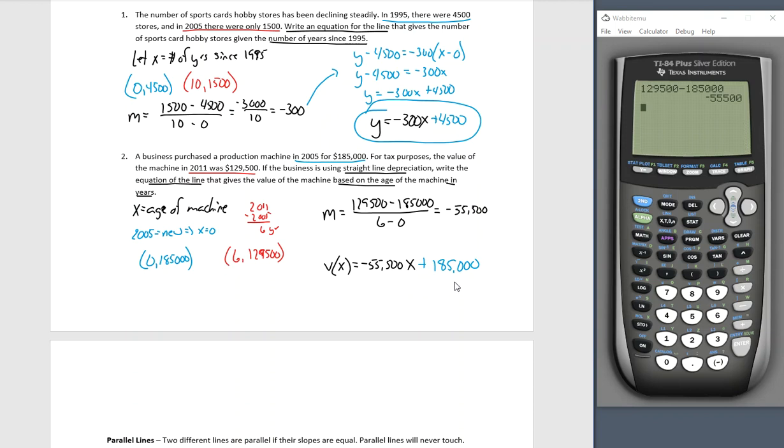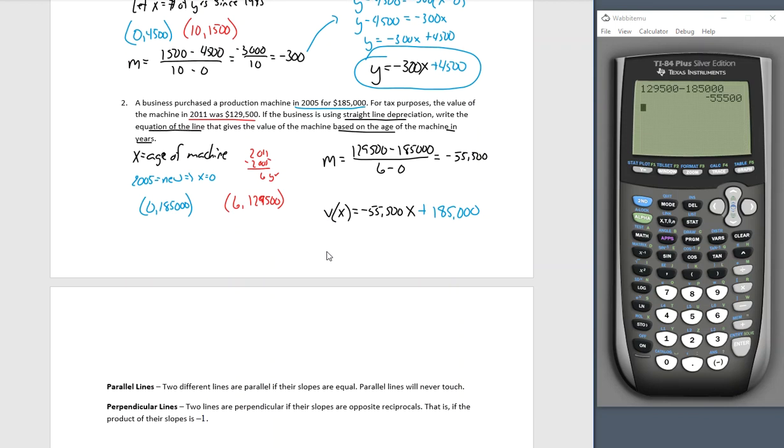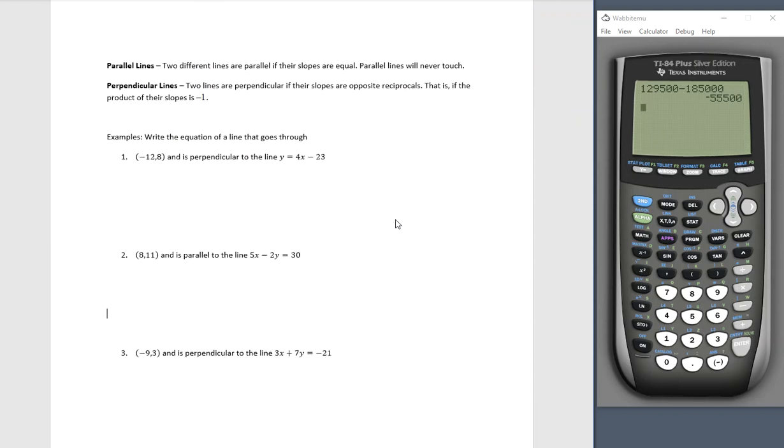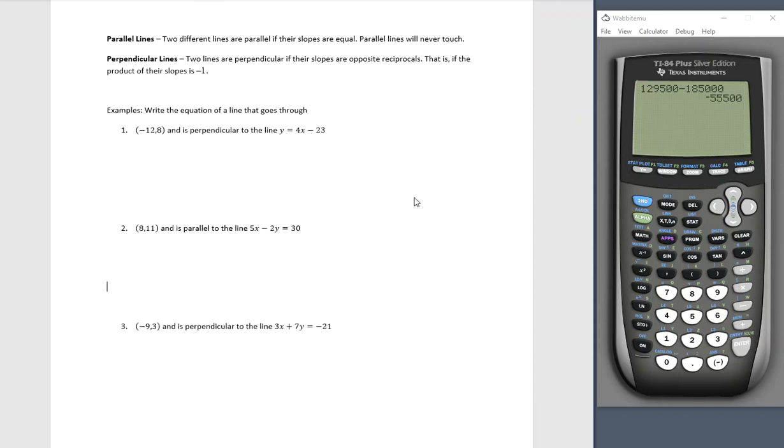We now know that the value of the machine. Let me call it V of x based on the age. Negative 55,500 x plus 185,000 the y intercept value, the original cost. What this tells us is the machine originally cost $185,000 and it is losing $55,500 per year in value. So they always have applications. These word problems. I mean, they are applications.